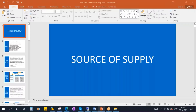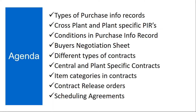This conference will now be recorded. We'll be starting our next topic: source of supply. The topics we are going to cover include types of purchase info records, cross-plant and plant-specific PIRs, conditions in purchasing info records, and the buyer's negotiation sheet. We will cover up to this part in today's class.